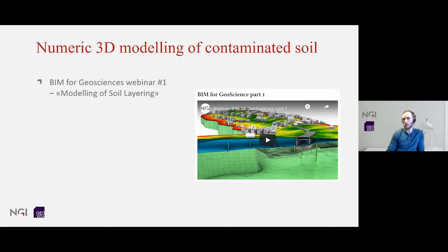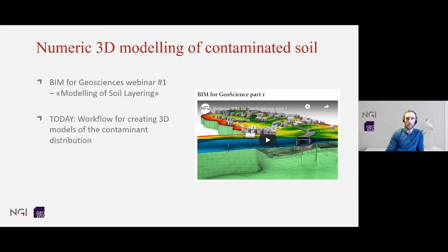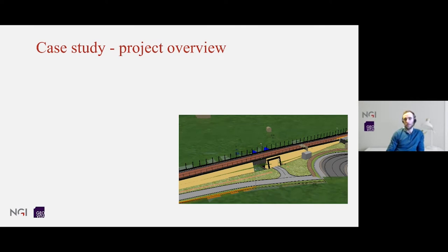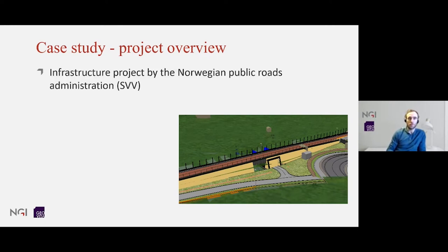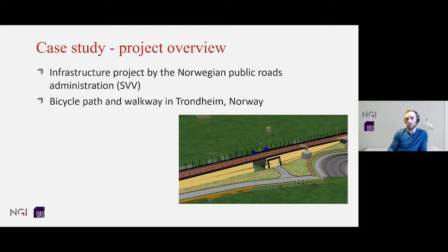I'm now going to do a demonstration of the workflow we're currently using to create 3D models of contaminated soil using Leapfrog Works. In BIM for Geosciences webinar one, my colleague Björn Anders Mortensen did a presentation about Leapfrog Works and how to create models of soil layering. In this presentation today, I'm going to focus on how to use the soil layer model to create a 3D model of the contaminant distribution, using the soil model as a spatial boundary for the contaminants. To demonstrate this, I'm going to use a case study from an ongoing project in Trondheim — an infrastructure project by the Norwegian Public Roads Administration, where we are planning to build a bicycle path and walkway between two neighborhoods.